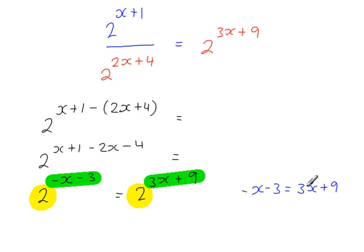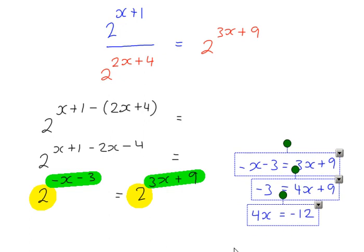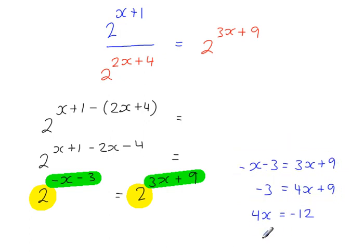So adding x to both sides gives 4x plus 9. Subtracting 9 from each side, so then 4x is equal to minus 3, minus 9, minus 12. And then the last step here, just dividing by 4, x is equal to minus 3.